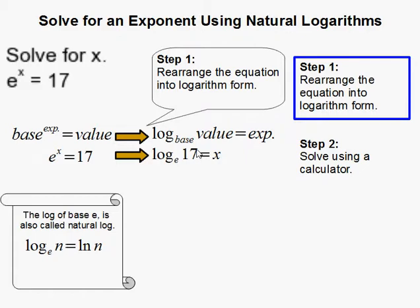And then the value 17 goes here, and the exponent then is on the x, it's way over here. So now, what you can do is convert this to the natural log of 17 equals x.